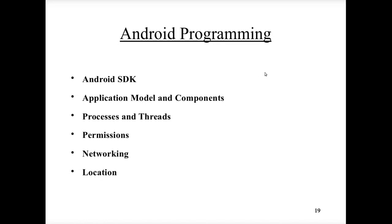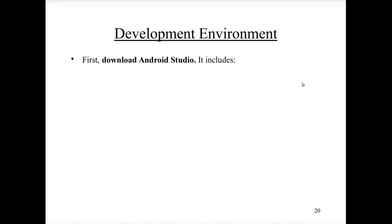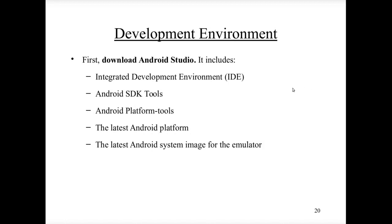The development environment for Android requires downloading Android Studio, which includes an integrated development environment, Android SDK tools, platform tools, and the latest Android platform. It also includes Android system images for emulation, allowing you to test your application on different operating system versions and different device configurations in emulation. You also need the Java Development Kit installed beforehand.